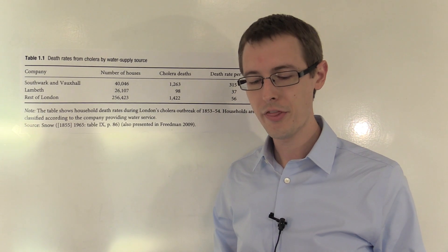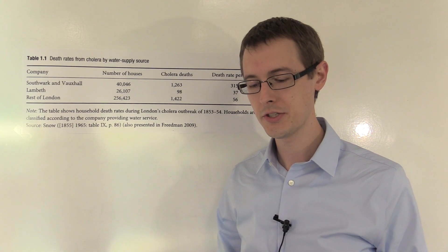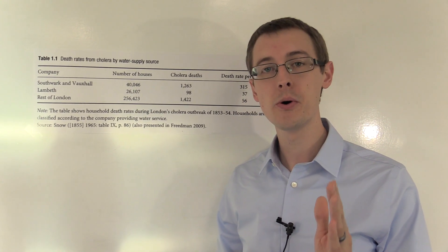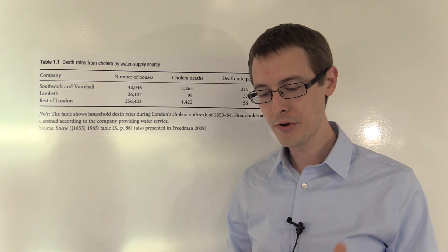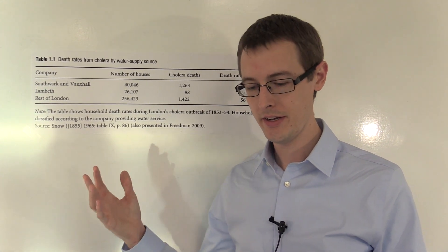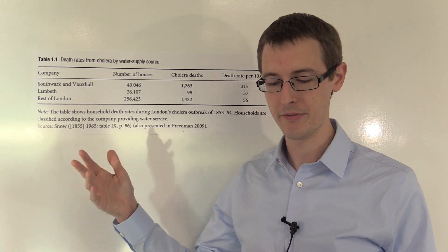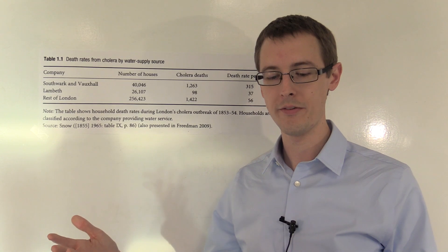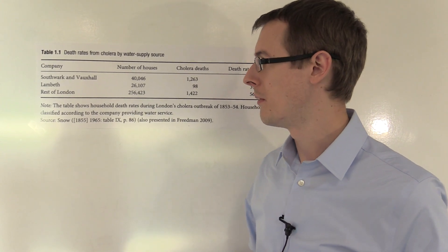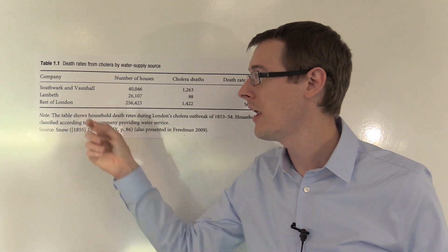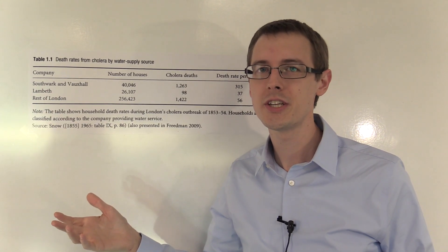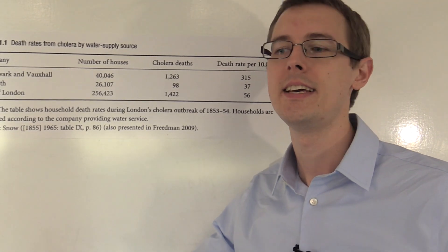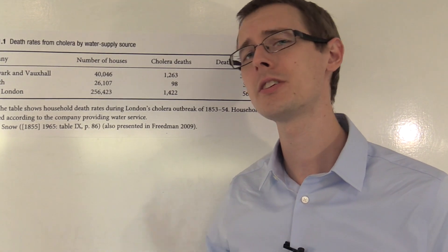Well, Snow also argues that this is not the case. And the reason is, he says, more than 300,000 people of all ages and social classes were, now I'm quoting him, divided into two groups without their choice, and in most cases, without their knowledge, one group being supplied with water containing the sewage of London, and amongst it, whatever might have come from the cholera patients, the other group having water quite free from such impurities. So, he basically argues that people didn't even know that Lambeth moved their pipe. They weren't even making the decisions because their landlords were doing it. So, how could they possibly have selected into picking Lambeth because it was healthier? It's just not plausible.